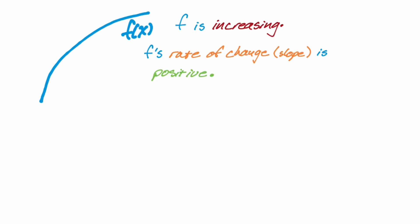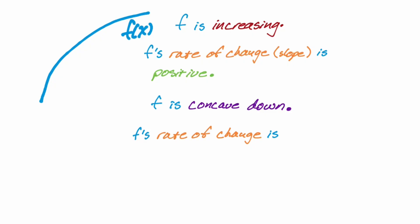The next thing is concavity. F here is concave down. What does concave down tell us about the rate of change? F's rate of change, or slope, is decreasing. Sometimes people have trouble with this for increasing functions. Here are some line segments: you go from a slope of maybe ten to one to one-tenth. Those are definitely decreasing as you move from left to right. Write those down on some note cards and memorize them — it's easy to get this down with just a little bit of practice.